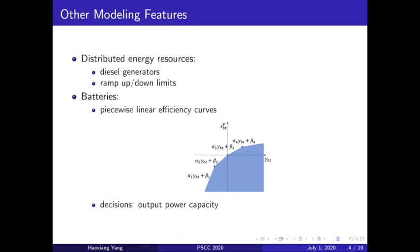Other realistic modeling features we include here are the distributed energy resources. We're going to model the diesel generators in some buses and we're going to include the ramping constraints between the periods. We're also going to set up batteries with the piecewise linear efficiency curve shown in this figure. We're going to convexify it using the relaxed area below the curve so that we keep a nice convexity property, and for the batteries we're going to decide how much output capacity we're going to set up at the very beginning of the time horizon.